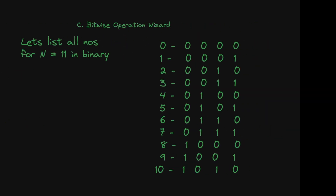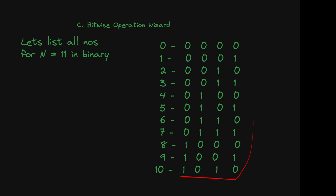Let's play around with this problem and list all the numbers up to 11 in binary representation: 0, 1, 2, 3, 4, 5, 6, 10, and so on. This gives us 4 bits. All additional bits would be 0 in front. For example, 8 is 1000, 10 is 1010, and 3 is 0011.